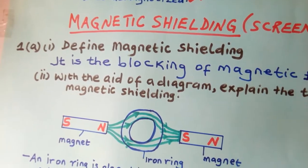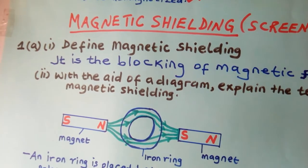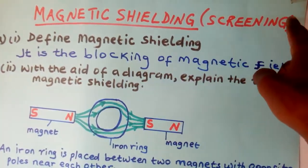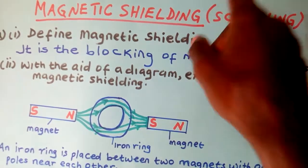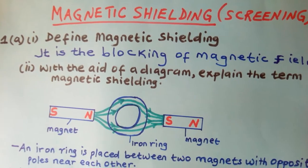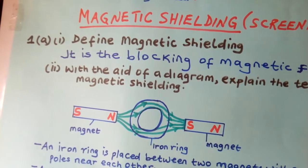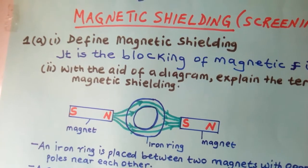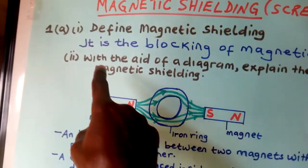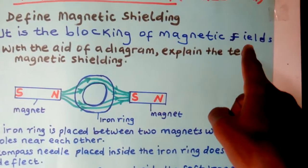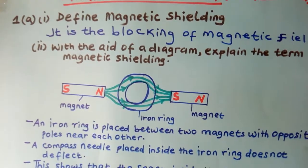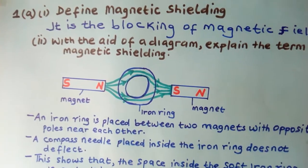The next thing we are going to look at is magnetic shielding, also called magnetic screening. This word shielding comes from the word shield — to shield is to protect. So when we say magnetic shielding, it means you are protecting magnetic fields; you don't want magnetic fields to pass somewhere. Magnetic shielding is the blocking of magnetic fields. If you don't want magnetic fields to pass somewhere, that process is called magnetic shielding or magnetic screening.